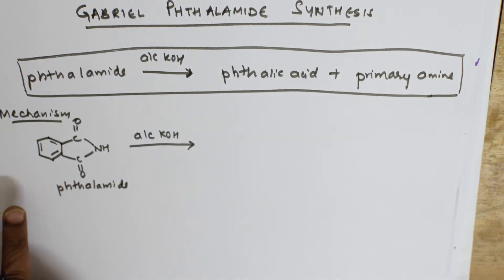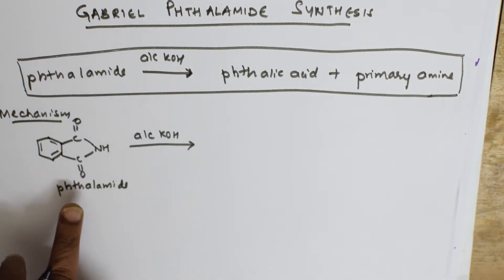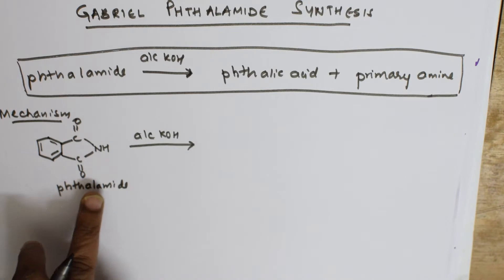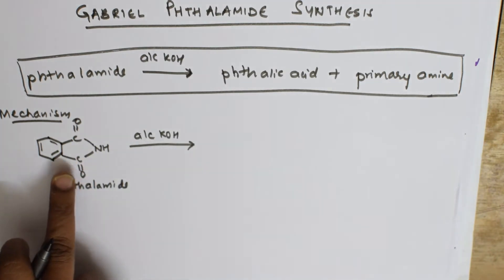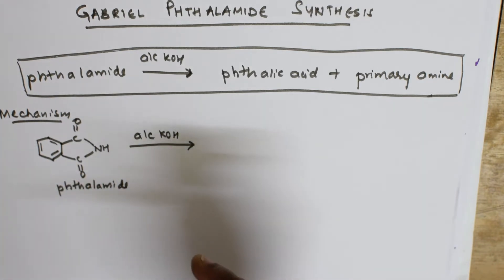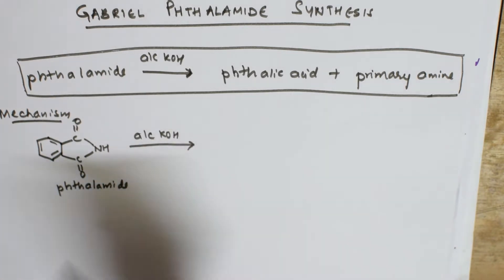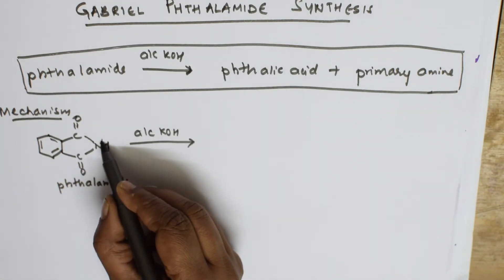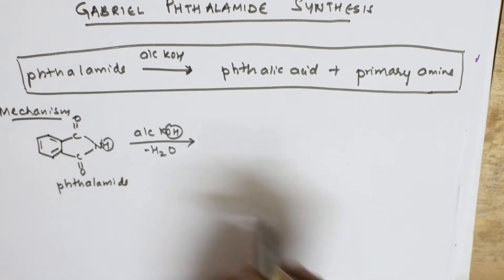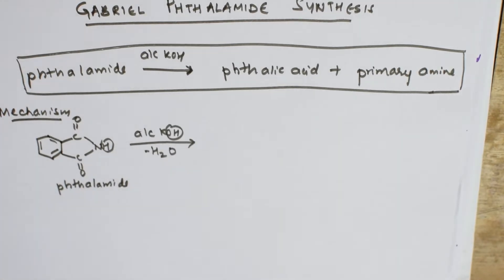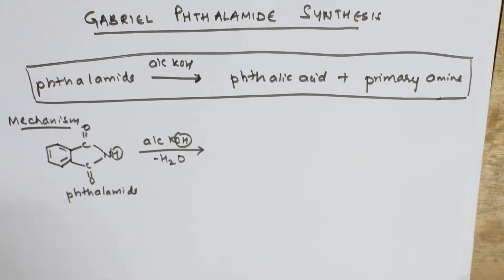When you take alcoholic KOH, the first important thing that happens is removal of a water molecule from this compound. Water gets eliminated — H from one side and OH from the other side gets eliminated as water. So we have taken phthalimide with alcoholic KOH, dehydrated it, and taken out the water molecule. Let's write the resulting compound.